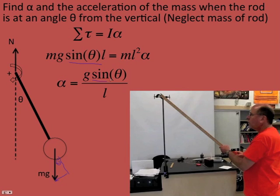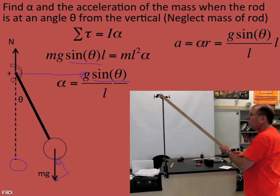We can solve for alpha and get the same thing as before, except with a sine theta factor: alpha equals (g/L)·sinθ. If theta is 90°, sine 90 is 1 and we get g over L — the same result as before. It also makes sense at the bottom: if I let it go at the bottom, it won't move, and sine of 0 is 0, so there's no torque. The linear acceleration using a equals alpha·r, with r equals L, gives g·sinθ.